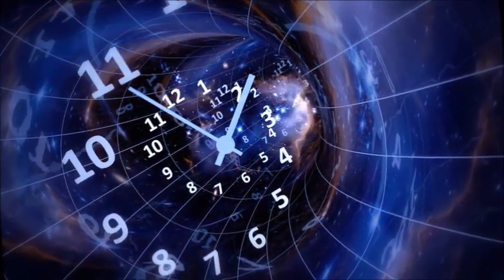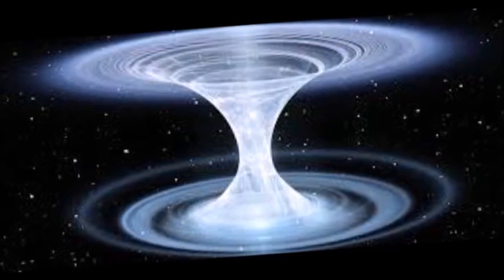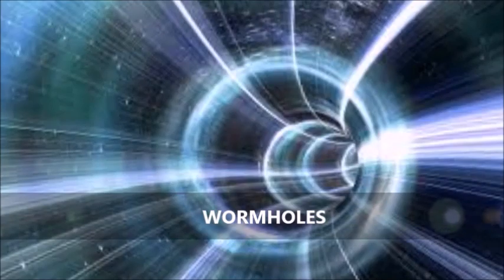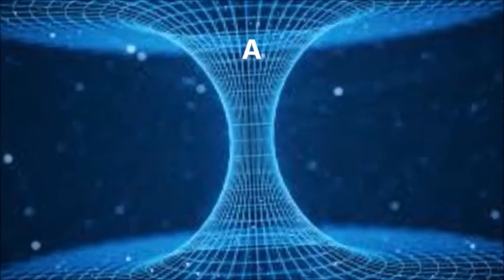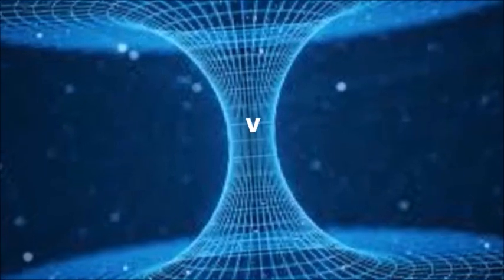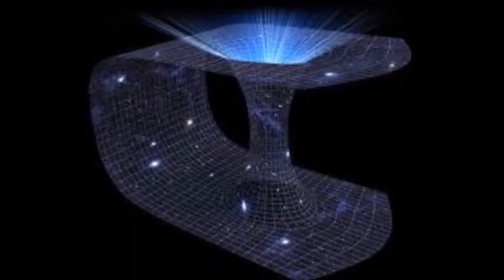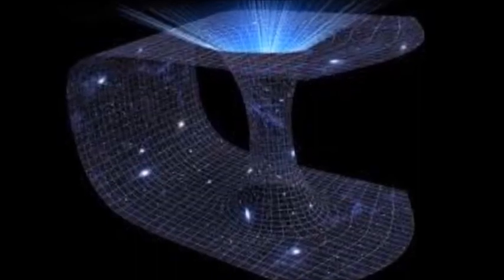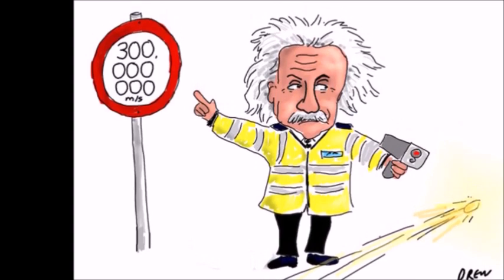Traveling through wormholes and black holes. Einstein suggested the existence of bridges through time and space, which are also known as wormholes. A wormhole would allow an object to travel from one point to another faster than the speed of light by taking a shortcut through space-time, meaning the object won't break the rule of the so-called universal speed limit, which is the speed of light.